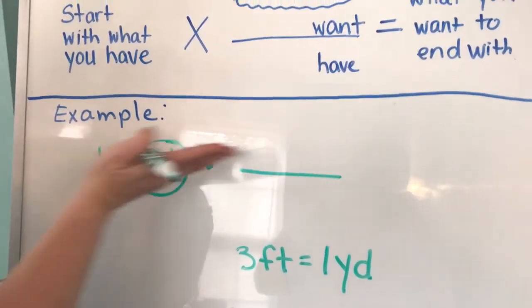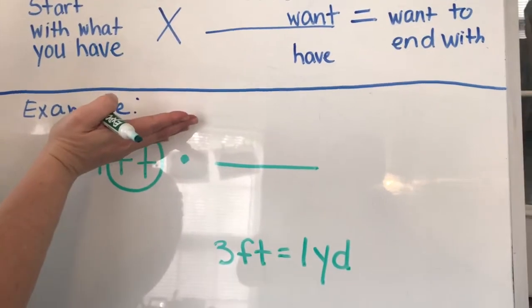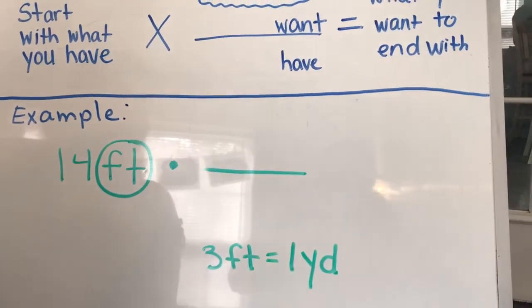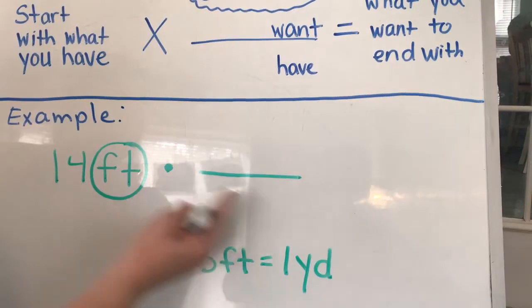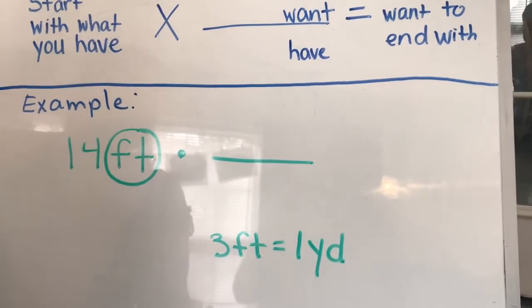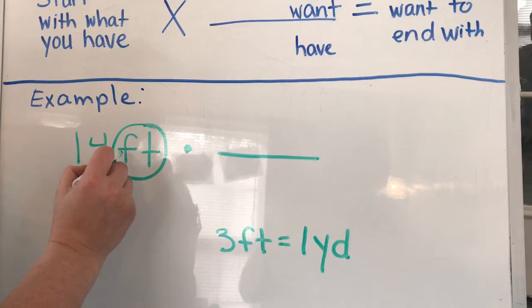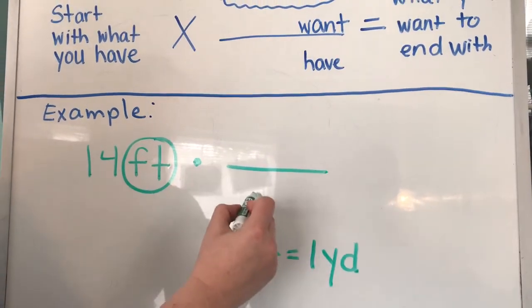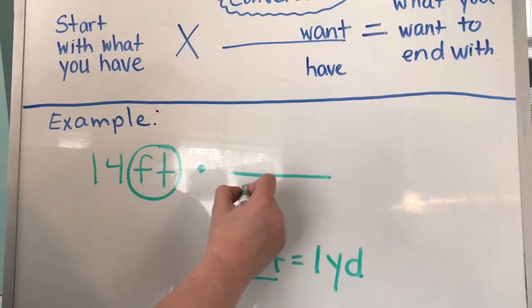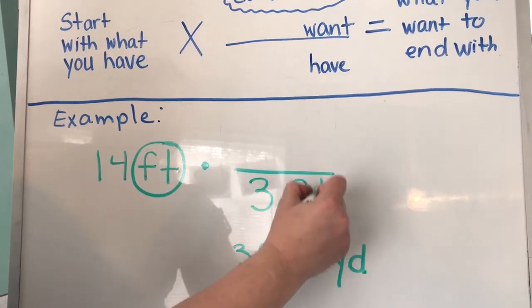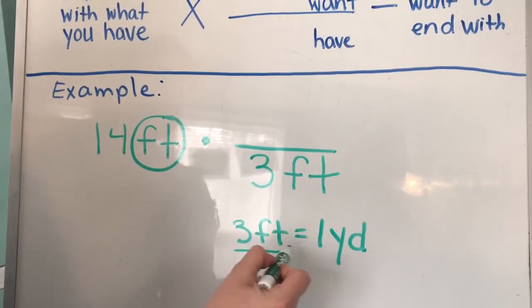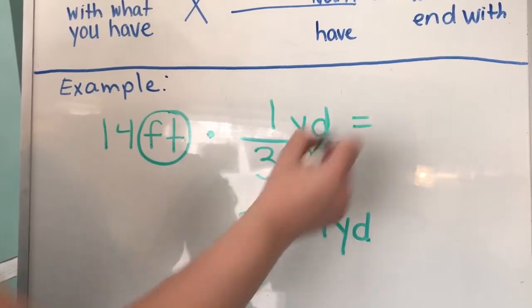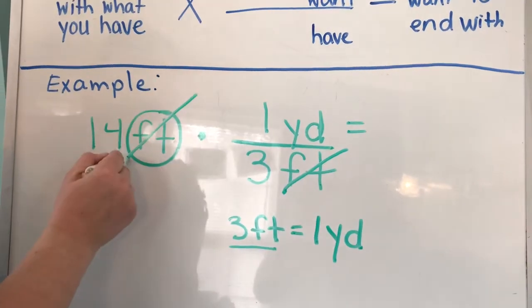Remember when we multiply across, whatever we have on top of this fraction bar and the bottom, if they're the same thing, feet over feet, they will cancel out or be equal to 1. So feet, 14 feet times, want to put the 3 feet on the bottom. So our feet will cancel out and put our 1 yard on top and will be equal to cancel, cancel.